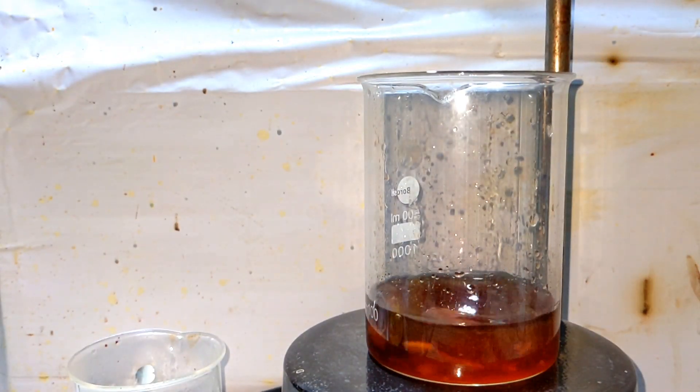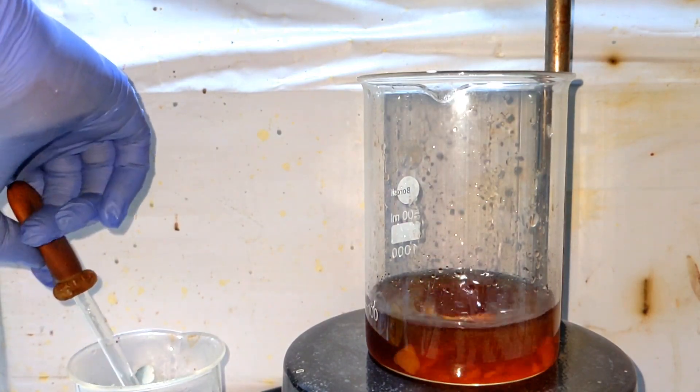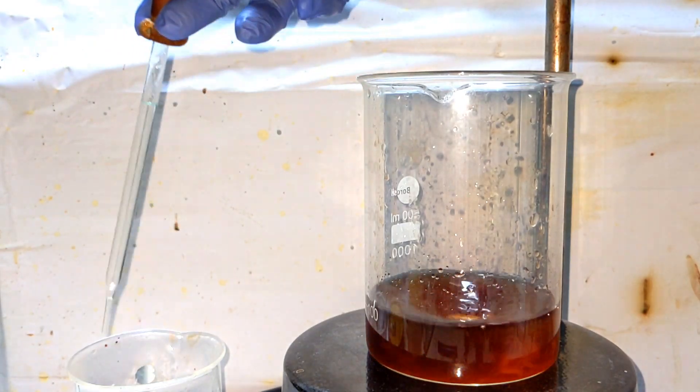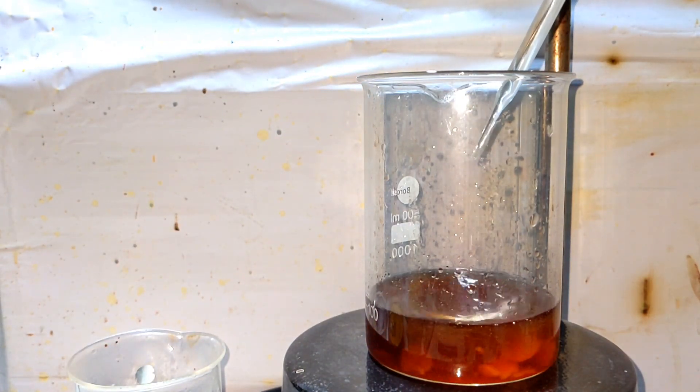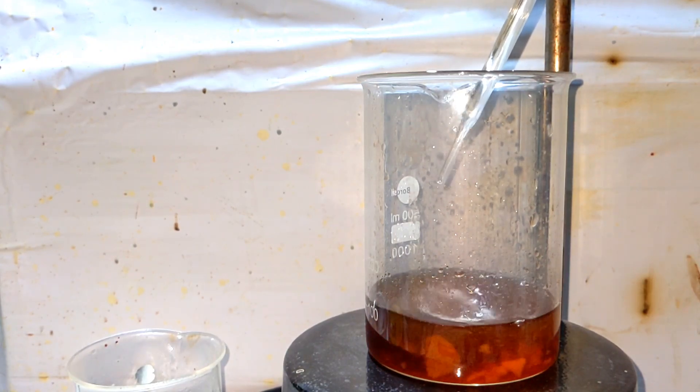Now 29 milliliters of the 37% hydrochloric acid was added to the beaker with a pipette with stirring. Care must be taken to add the acid in small amounts as a lot of frothing can take place in this reaction as the carbon dioxide gas is released.